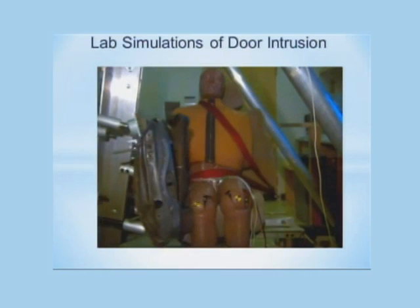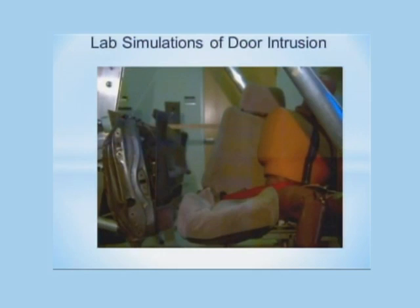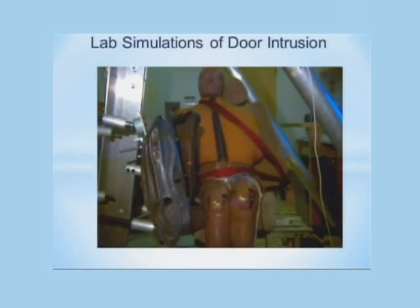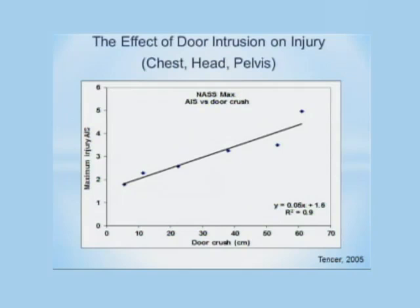We've actually worked on a system that helps move the occupant away from the loading zone — not by moving the occupant, but by moving the whole seat. This is a slow motion film of a four meters per second, about 25 mile-an-hour collision. You actually move the whole seat with the occupant into the center console zone, and that reduces the forces acting on the occupant. The door intrusion is by far the greatest factor in loading the hip and creating significant pelvic and hip injuries.